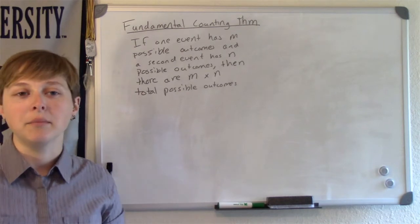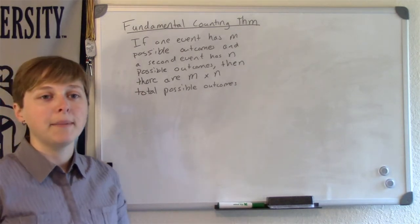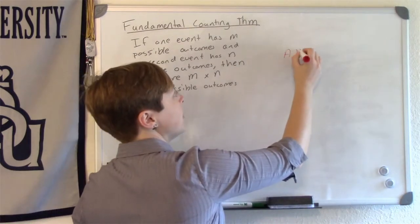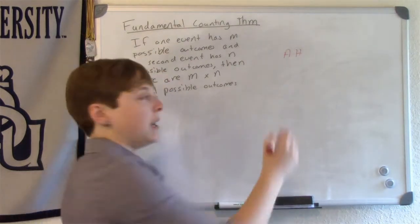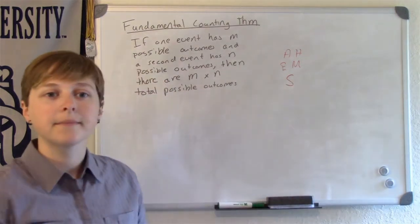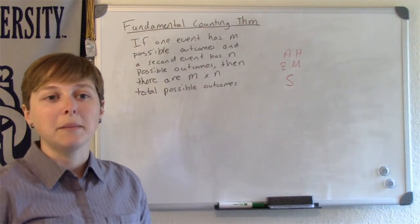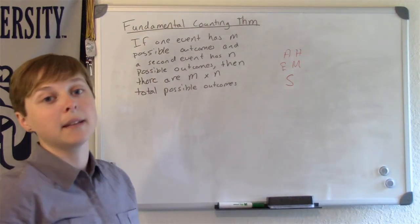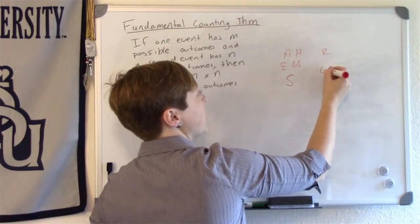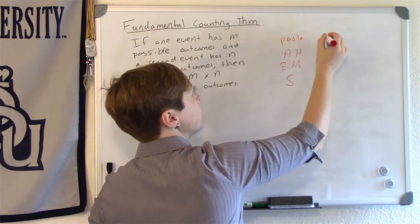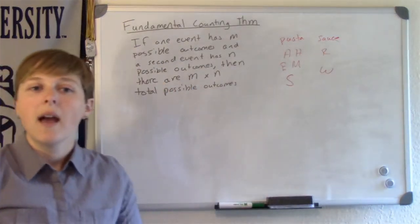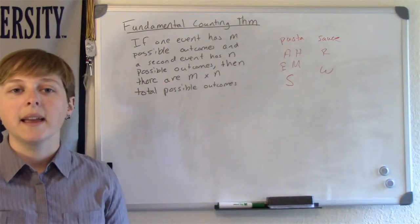Let's start with an example. For dinner, I have three types of pasta: angel hair, elbow macaroni, and spaghetti. I also have two different types of sauce: red sauce and white sauce. How many different possible ways can I make my dinner?